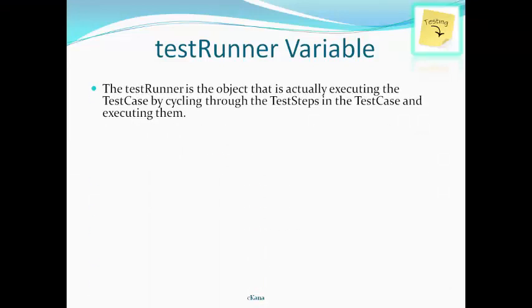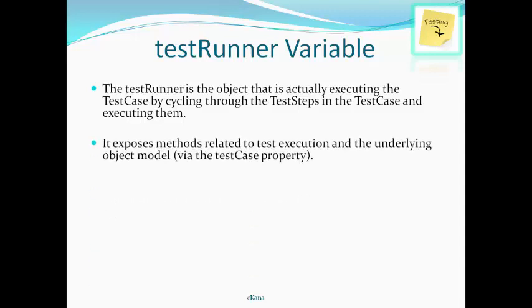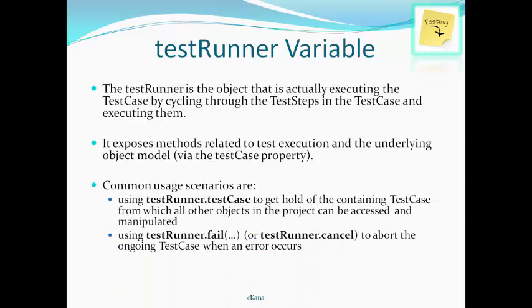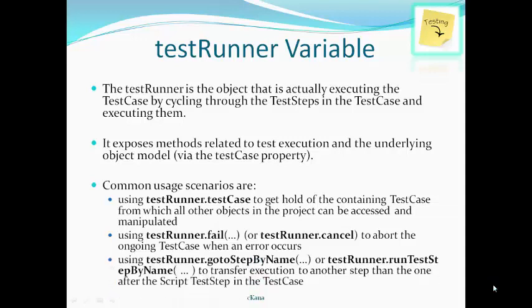The test runner variable is the object that actually executes the test case by cycling through the test steps and executing them. It exposes methods related to test execution and the underlying object model via the test case property. Key uses include: testRunner.testCase to get the containing test case; testRunner.fail or testRunner.cancel to abort the ongoing test case when an error occurs; and testRunner.gotoStepByName or testRunner.runTestStepByName to alter execution flow and transfer execution to another step.